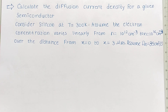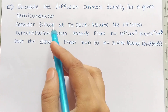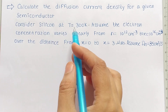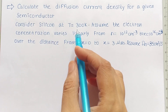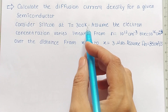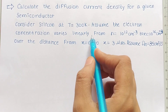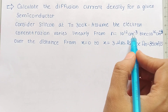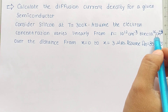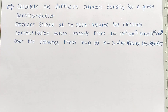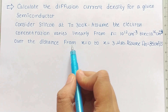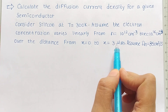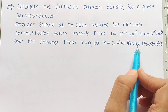Let us start with an example. Here, a silicon material is given which is at room temperature 300 Kelvin. The electron concentration varies linearly from n equal to 10 to the power 12 cm⁻³ to n equal to 10 to the power 16 cm⁻³. The distance is varying from x equal to 0 to x equal to 3 micrometers.